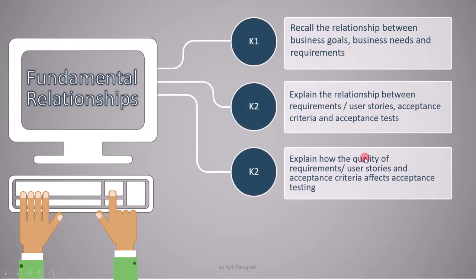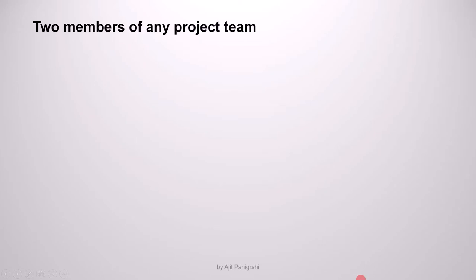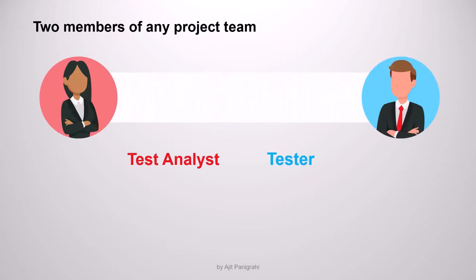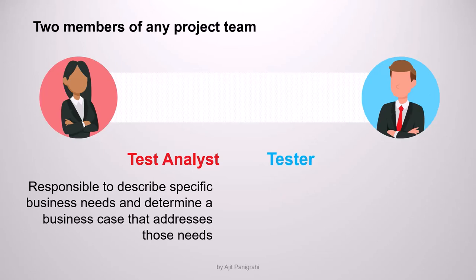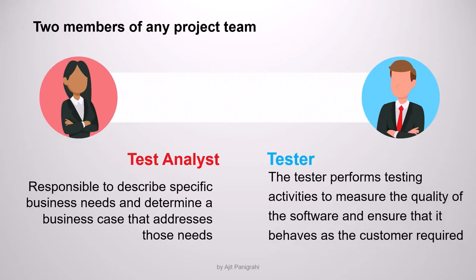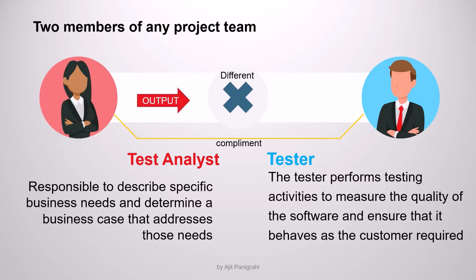We will cover the introduction to fundamental relationships; in upcoming lectures we will address each learning objective in detail. Normally in the software development lifecycle there are two key team members: the business analyst and the tester. The business analyst describes specific business needs and determines the business case, while the tester performs testing activities to measure software quality and ensure it behaves as the customer requires. Though their roles appear different, they complement each other.